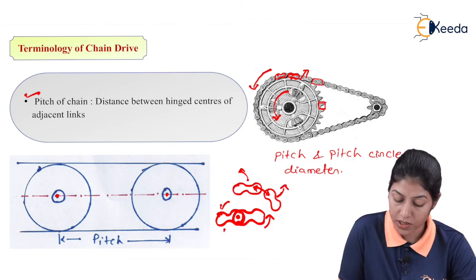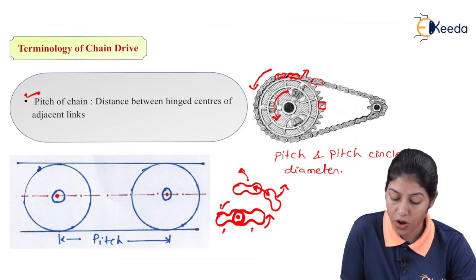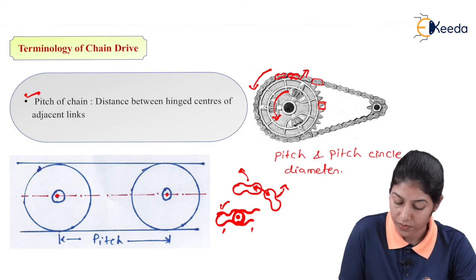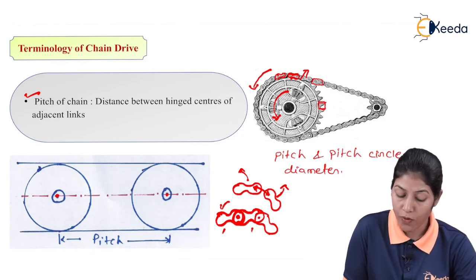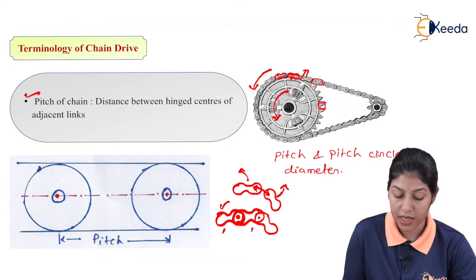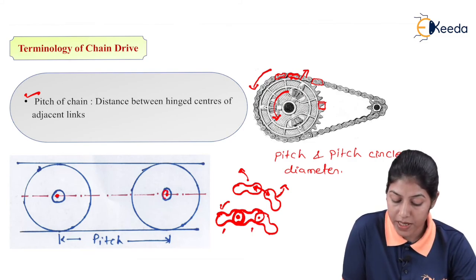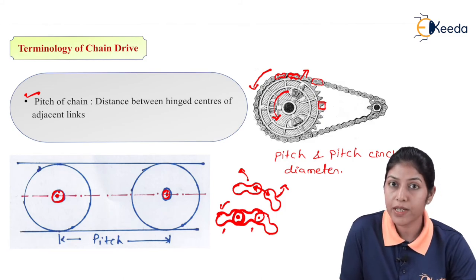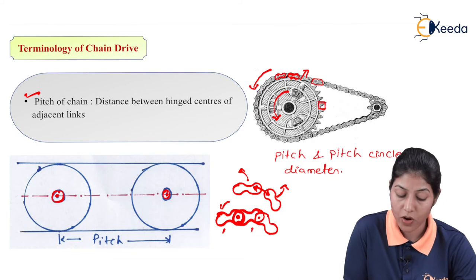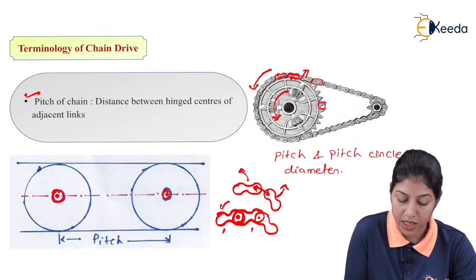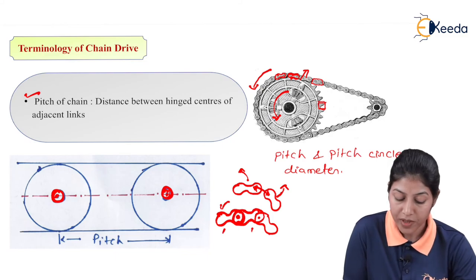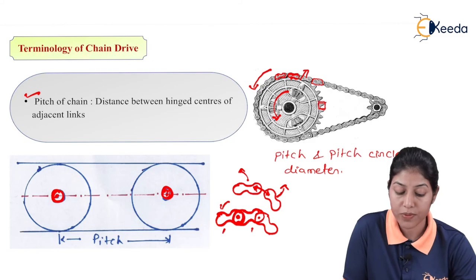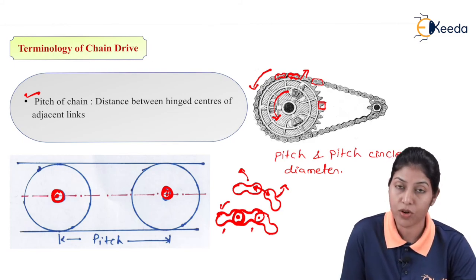Considering this first link, second link, third link, fourth link and so on — the hinge center represents the center about which the links are moving. The distance between the hinge center of the first link and the hinge center of the second link represents the pitch of the chain. So pitch of the chain is the distance between two hinge centers of two adjacent links, which is equivalent to the center distance of two circles.